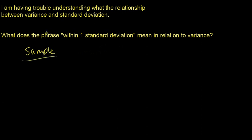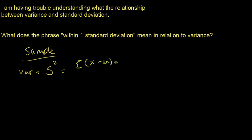There are different formulas for population variance and population standard deviation, but I'm going to focus on the sample. For sample variance, the symbol we use is s-squared. The formula is the sum of the squared differences from the sample mean, divided by n minus 1.